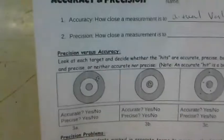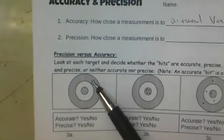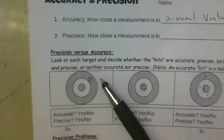If we look at a bullseye, this would be really precise because all of the shots are really close together in the same spot. You have a lot of precision there.